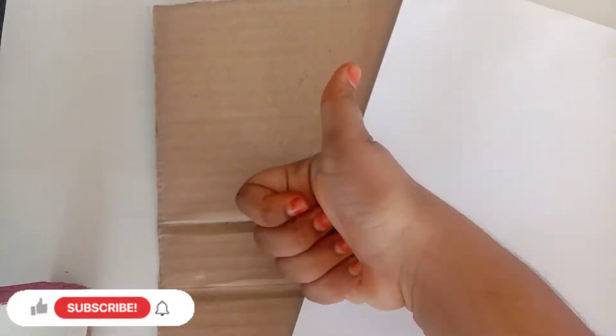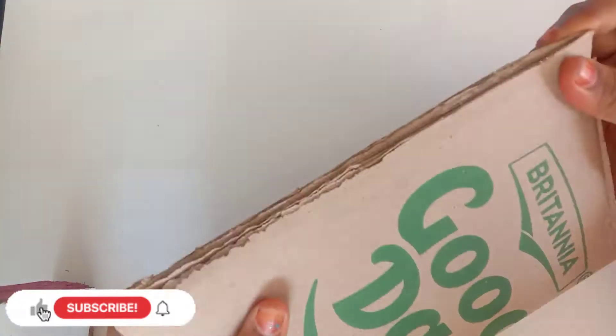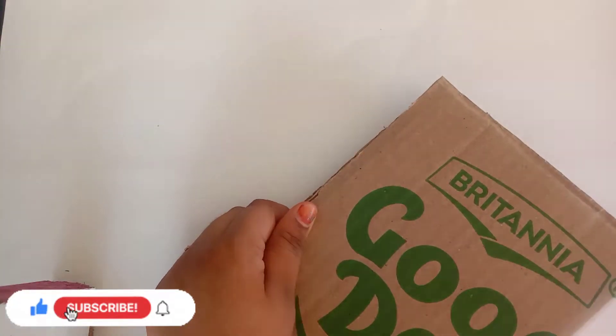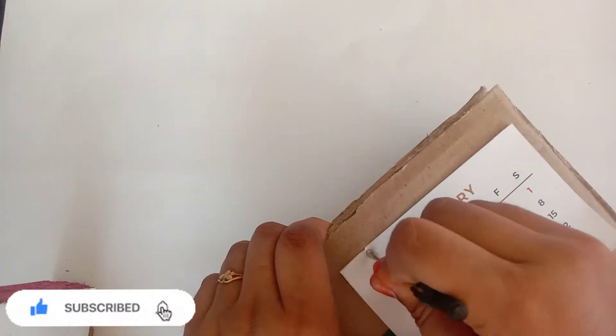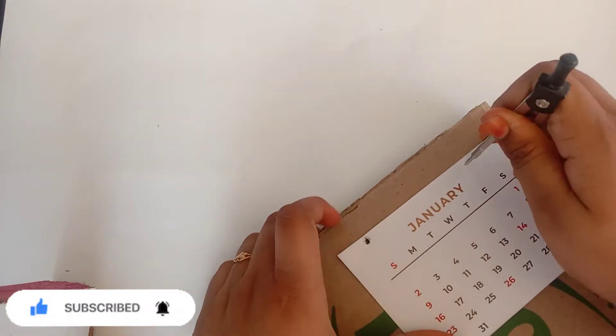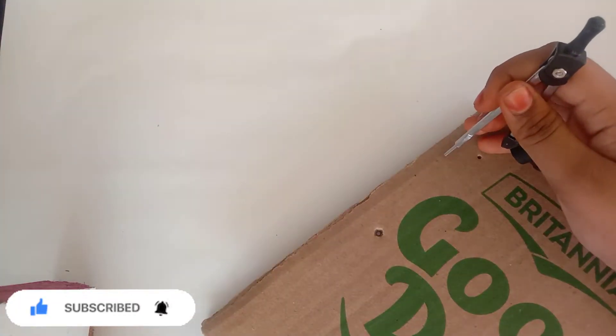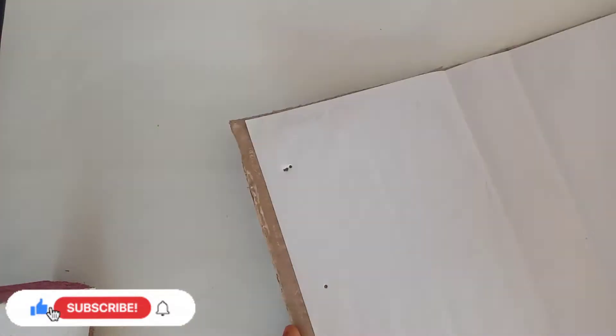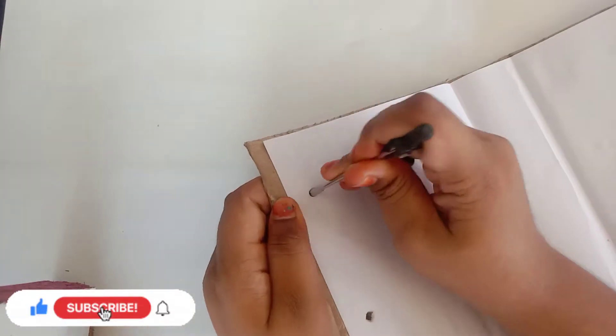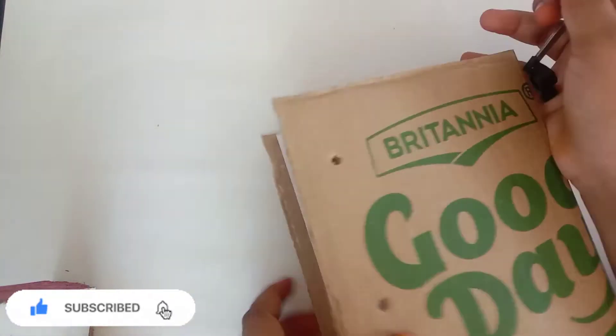We will be using cardboard sheets, a flat sheet, and we will be using a triangle shape. We will use a white color sheet and a compass.